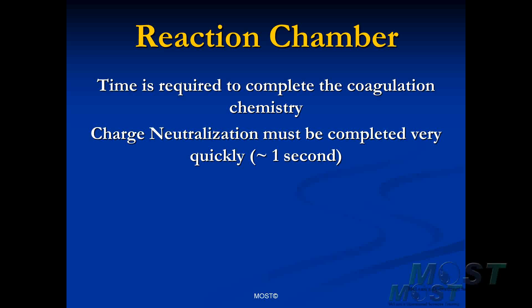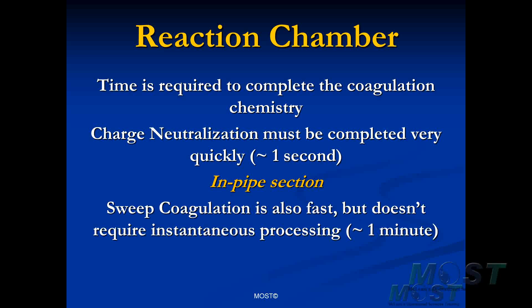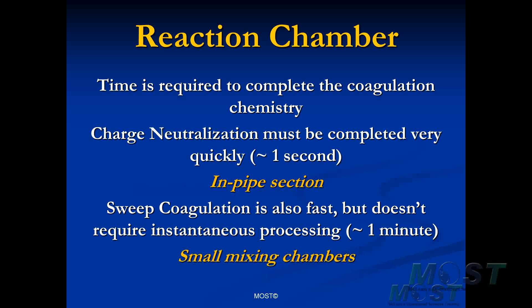With this small reaction time, all we really need in most cases is a section of pipe where we can accomplish charge neutralization. For the second form of coagulation, we also don't need very much volume in our reaction chamber because we only need about one minute to fully process coagulation. It doesn't require the instantaneous mixing that charge neutralization does, but this is also a fast process. So we will use a small basin for this, like a small mixing chamber.